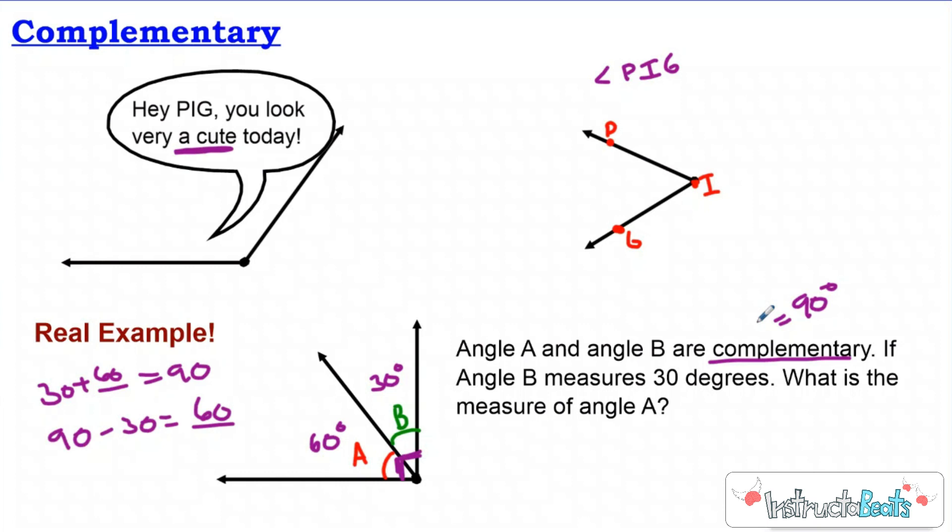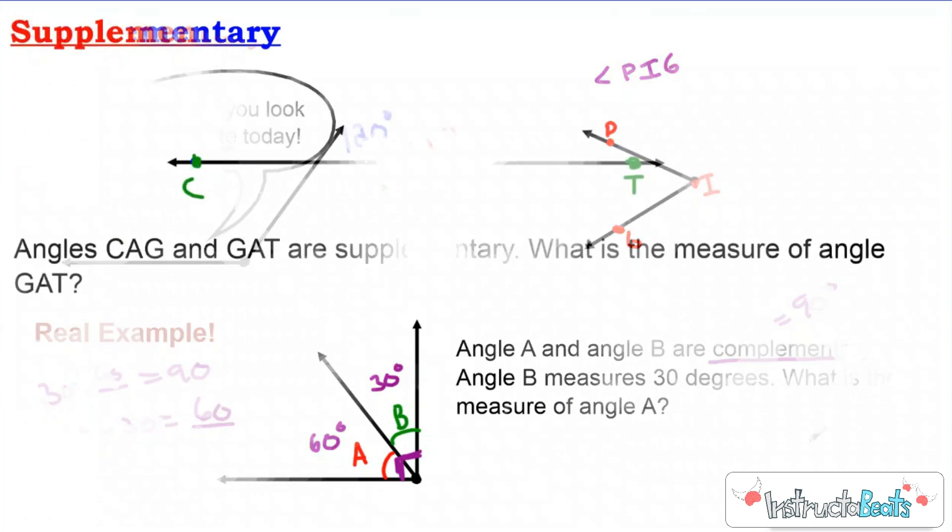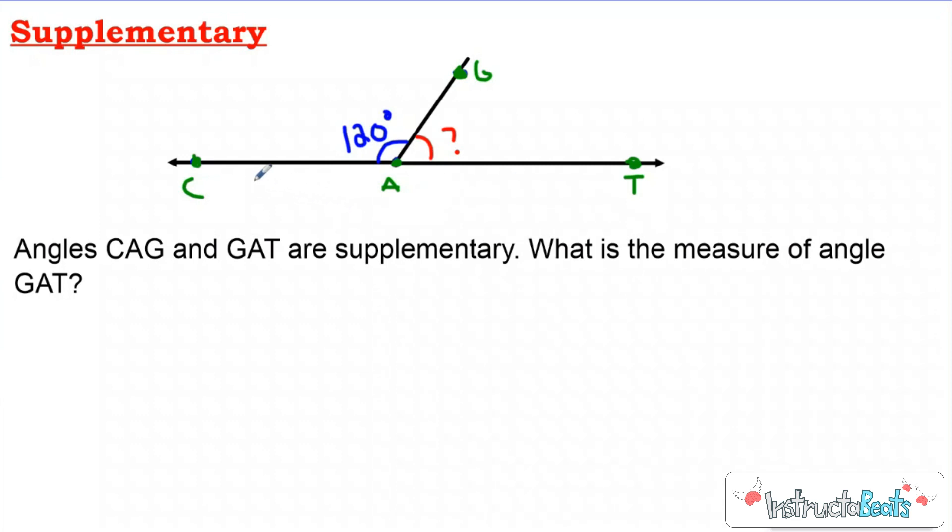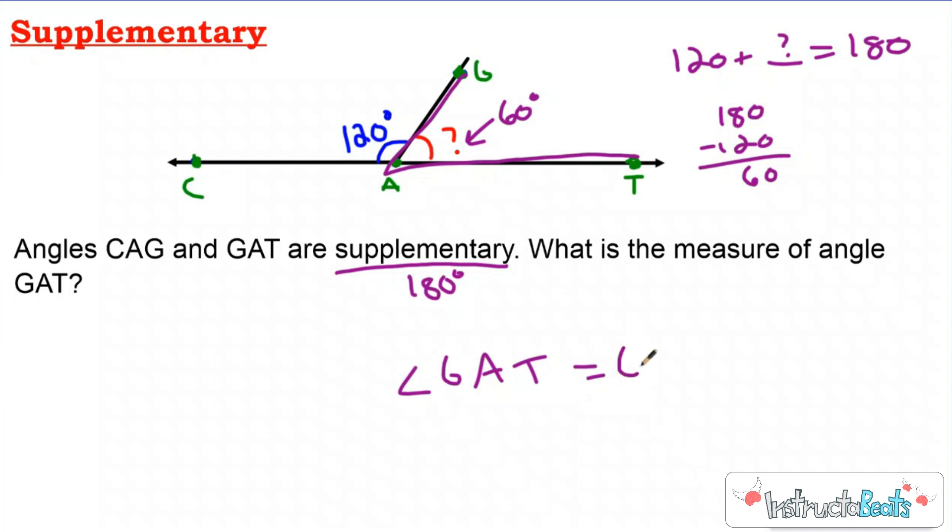So here's supplementary. Angles C-A-G and G-A-T are supplementary, which means 180 degrees. So what is the measure of angle G-A-T? So we know the whole thing from here to here makes a straight angle. These two angles together combine, supplement each other to make 180 degrees. So 120 right here. So 120 plus what, my question mark, is going to equal 180. I'm looking for this missing angle right here. Well, some of you might know it's 60, or you could just do 180 minus 120 and get 60. So my missing angle right here, angle G-A-T, has got to be equal to 60 degrees.